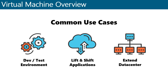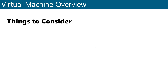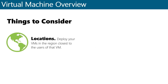When you decide that it's time to deploy a virtual machine in Azure, there are some things you need to think about before doing so. For example, you need to think about where the VM is going to be deployed. Generally speaking, you want to deploy your VMs in the region closest to the users of that VM. You wouldn't want to deploy a VM in the West US region if most of the users are physically located in New York.